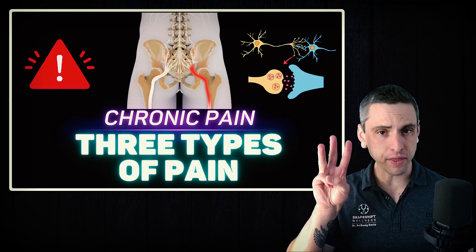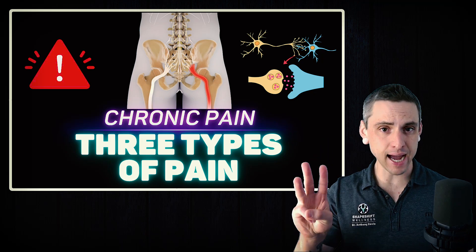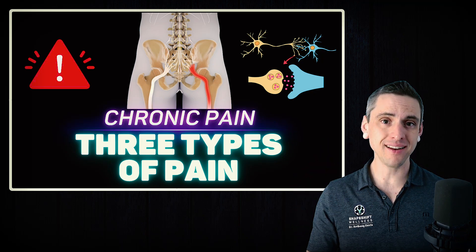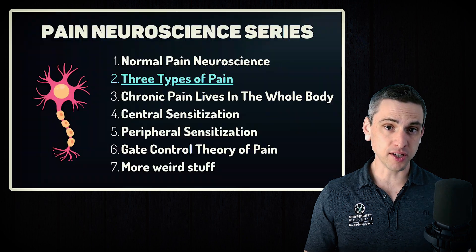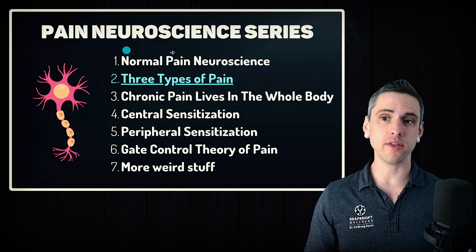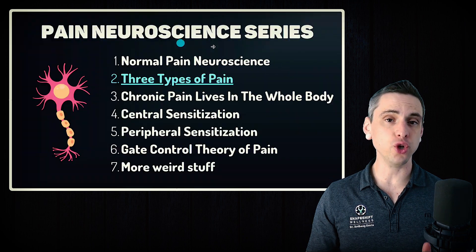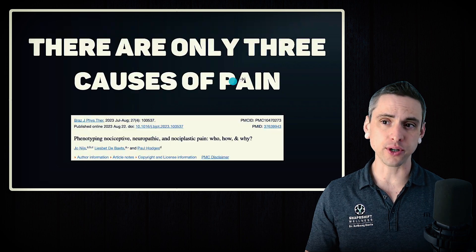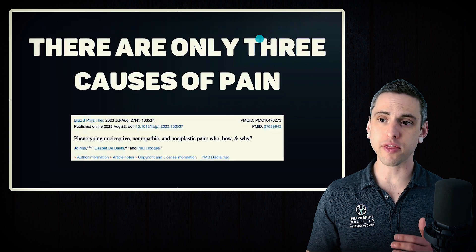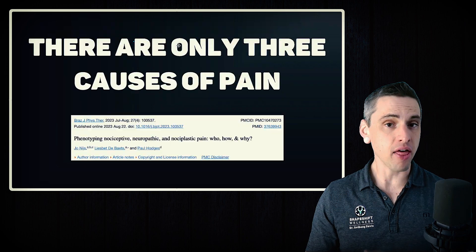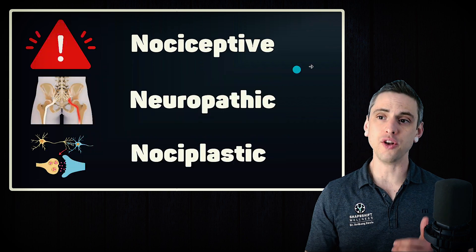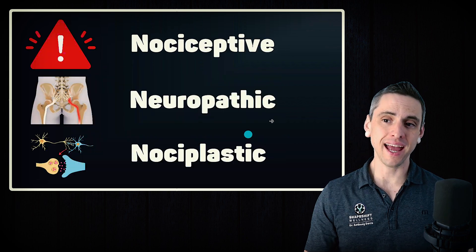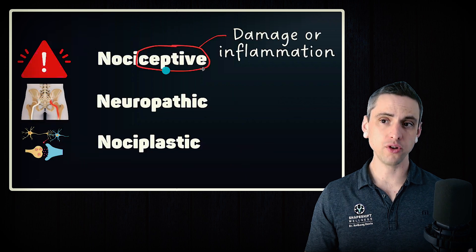If you have chronic pain, there are only three types of pain. So if you want to know why you're in pain, this video is going to explain it. Now this is part of a series, so if you haven't watched the first video on normal pain neuroscience, you might want to watch that first. In the scientific literature, we describe three different types of pain — there are only three. We have nociceptive, neuropathic, and nociplastic.